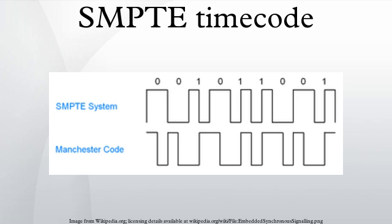Drop frame timecode dates to a compromise invented when color NTSC video was invented. The NTSC designers wanted to retain compatibility with existing monochrome televisions. To minimize subcarrier visibility on a monochrome receiver it was necessary to make the color subcarrier an odd multiple of half the line scan frequency. The multiple originally chosen was 495. With a 30 Hz frame rate the line scan frequency equals 15750 Hz, so the subcarrier frequency then became 3.898125 MHz.